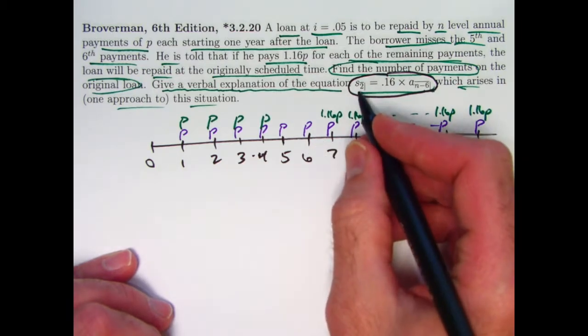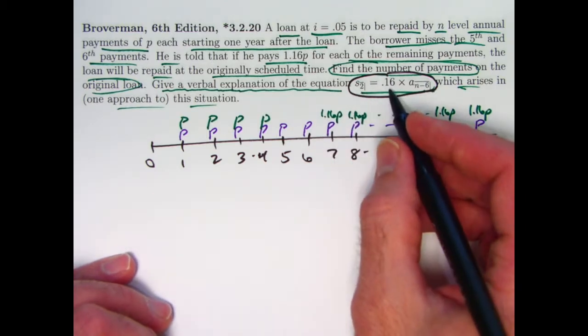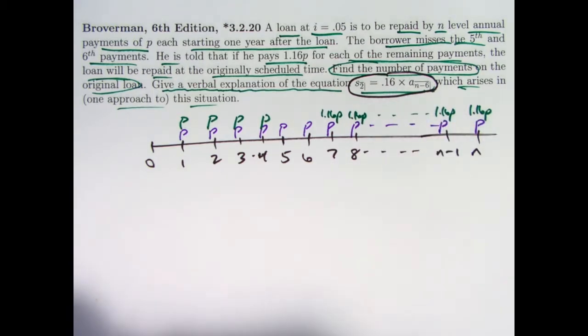We also have an s_2, that's a future value, accumulated value, of two payments. We see a 0.16 instead of a 1.16 here. How could we interpret this?